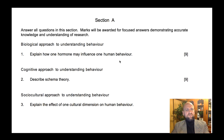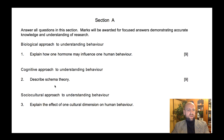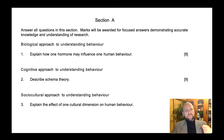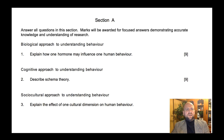Looking at some Section A examples: 'How one hormone influences behavior' — you'd explain it, for example discussing cortisol and memory, and you'd need a study such as Buchanan and Lavello. 'Describe schema theory' — summarize the theory and include a supporting study. 'Explain how one cultural dimension influences behavior' — define the term, explain how it affects specific behavior like conformity or personal relationships, and include supporting studies.